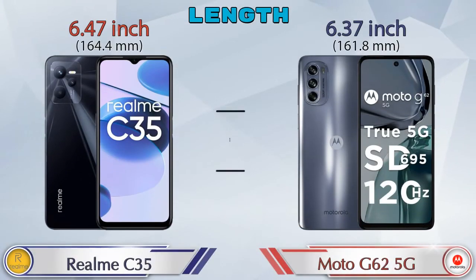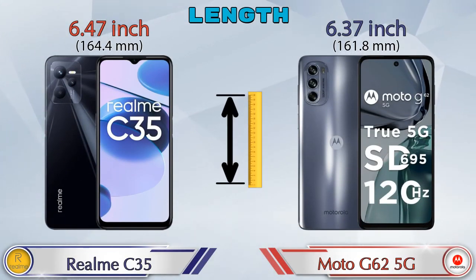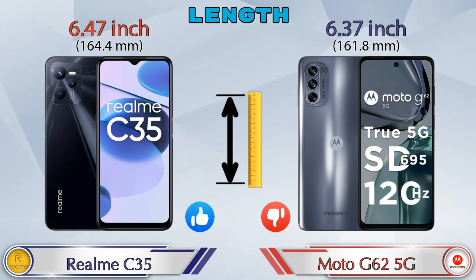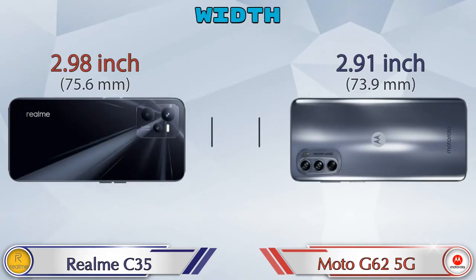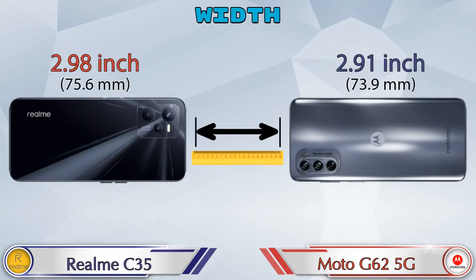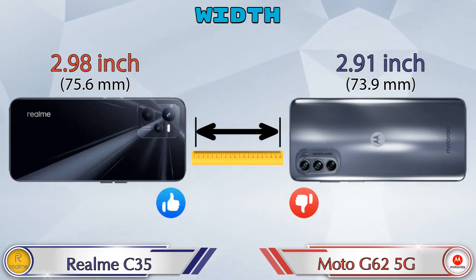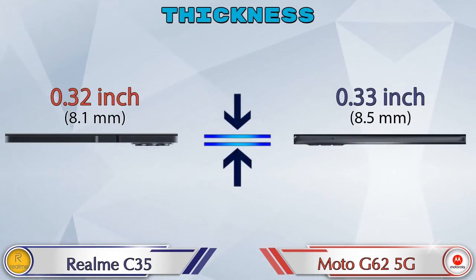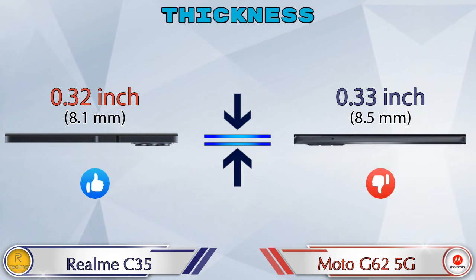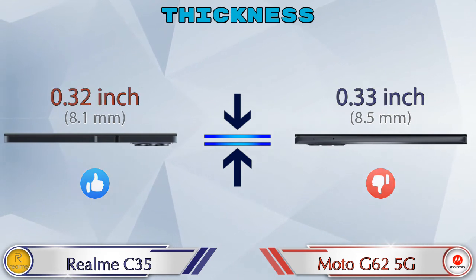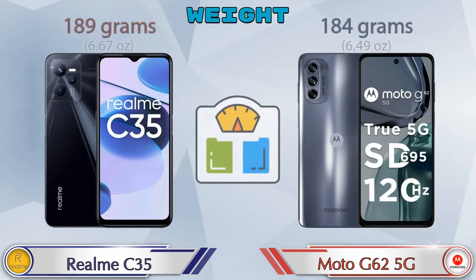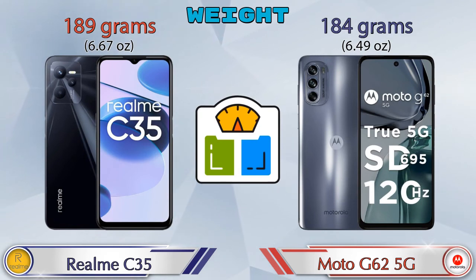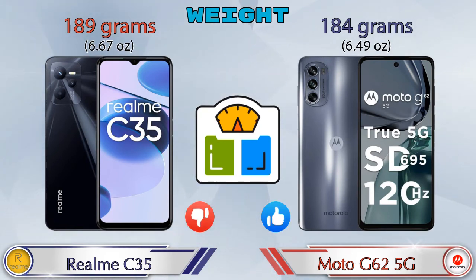Talking about the length of both phones: the Realme Narzo 35 is 6.47 inches and the Moto G62 5G is 6.37 inches, which is less than the Realme Narzo 35. Width: the Realme Narzo 35 is 2.98 inches and the Moto G62 5G is 2.91 inches, also less. Thickness: the Realme Narzo 35 is 0.32 inches and the Moto G62 5G is 0.33 inches, slightly thicker. Weight: the Realme Narzo 35 is 189 grams and the Moto G62 5G is 184 grams.